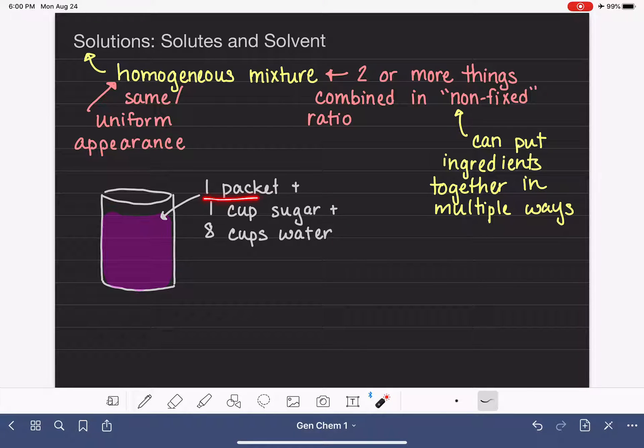And this is the ratio. One packet to one cup of sugar to eight cups of water. But there isn't a specific rule that says that these ingredients have to be combined in this way. Like you could add less water if you wanted it to have a stronger flavor. You could add less sugar if you wanted it to be not so sweet. And so this is what we mean when we say a non-fixed ratio. We can vary the amount of each ingredient and we're still going to end up with the same substance.